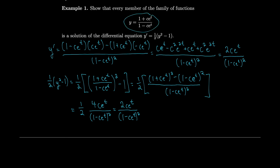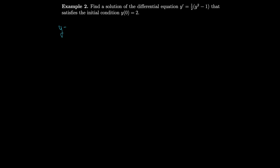It was easier to check whether the solution works than to solve the equation directly. Now let's find a specific solution given the initial condition y(0) = 2 — this is called the initial value problem. From our general solution y = (1 + ce^t) / (1 − ce^t), we plug in t = 0 and y = 2, giving 2 = (1 + c·e^0) / (1 − c·e^0) = (1 + c) / (1 − c). Now we solve for c.